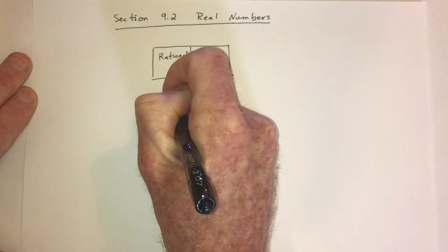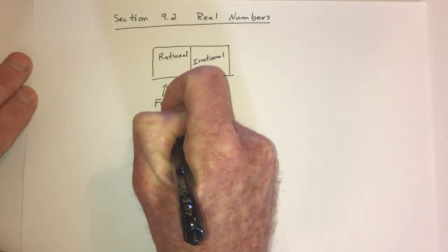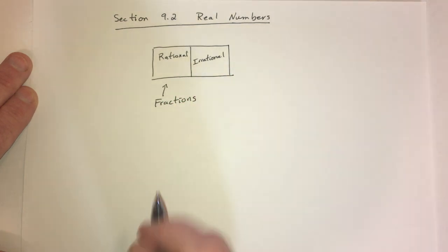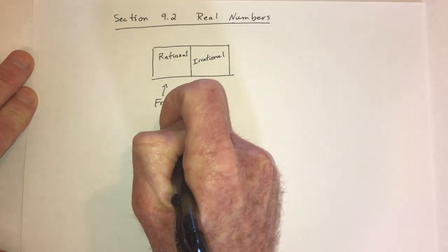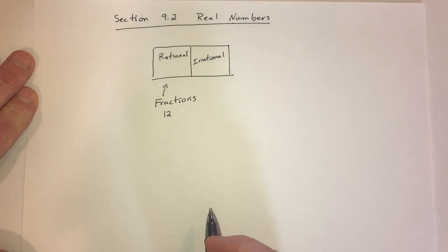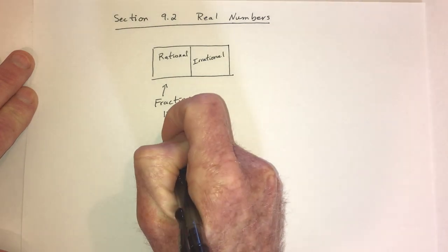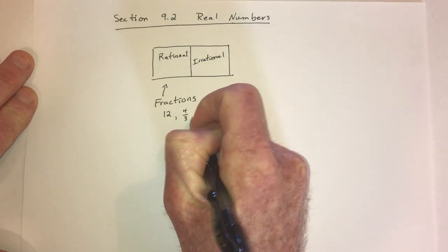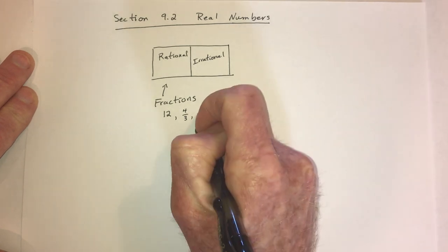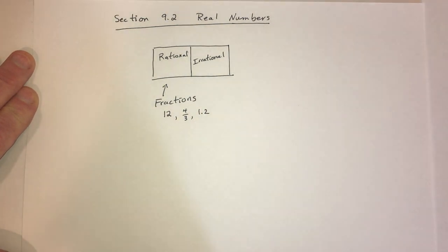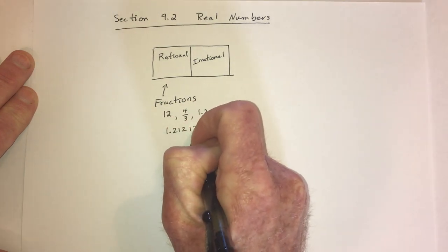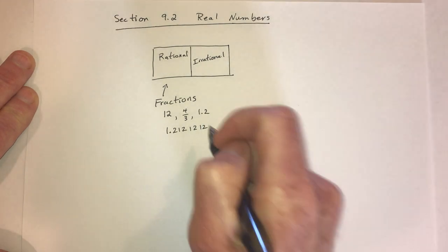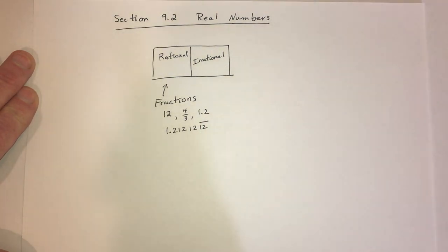The rational numbers — those are fractions. Another way to put it: that includes whole numbers like 12, fractions like 4 thirds, and then decimals — either decimals that stop, or decimals that repeat, like 1.2 repeating forever with that pattern. Then that's also rational.